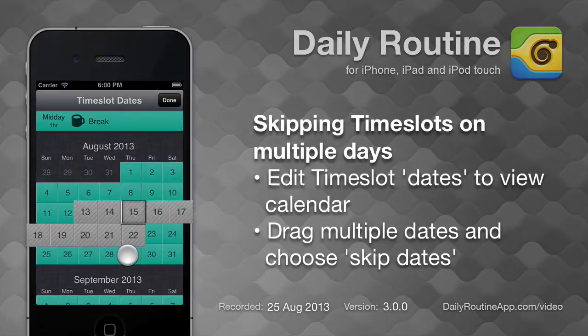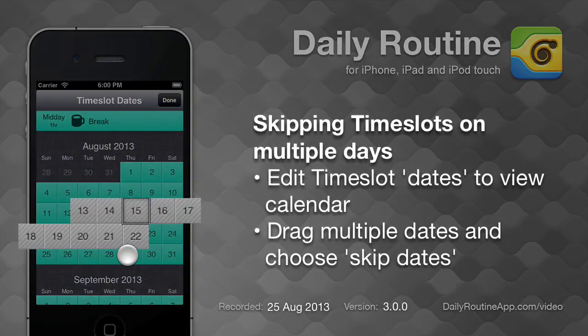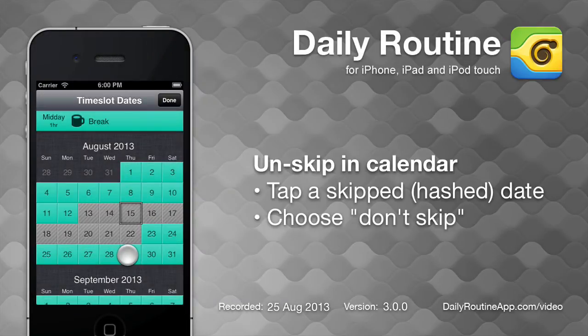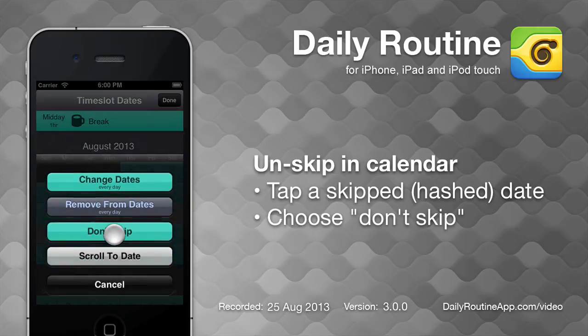Those dates are now hashed to indicate that they are skipped. You can un-skip dates by tapping them and selecting Don't Skip.